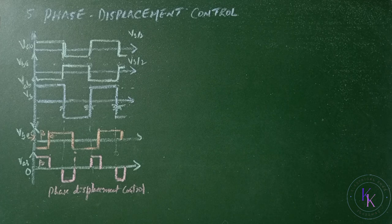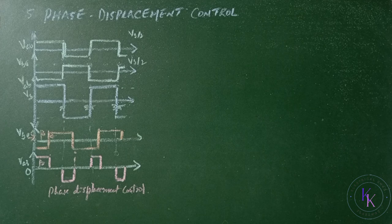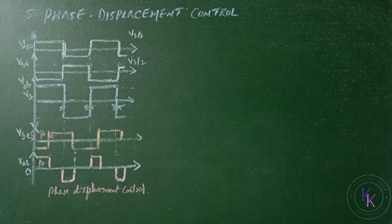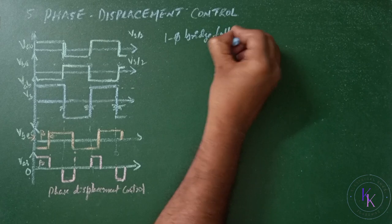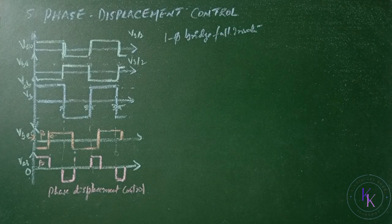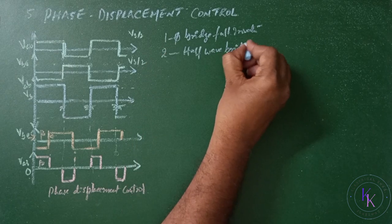The next technique is the phase displacement control. The voltage control can be obtained by using multiple inverters and summing the output voltage of inverters. A single phase bridge full wave inverter can be perceived as sum of two half wave bridge inverters.